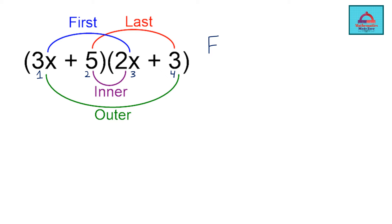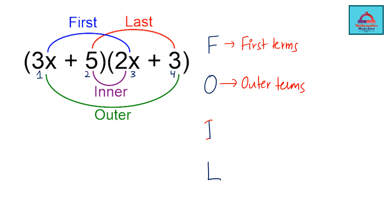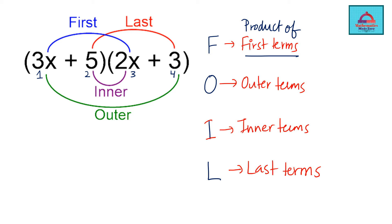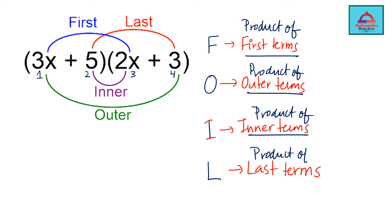F stands for first terms, O stands for outer terms, I stands for inner terms, and L stands for last terms. Because we are doing multiplication, we are going to take the product of the first terms, the product of the outer terms, the product of the inner terms, and finally the product of the last terms.